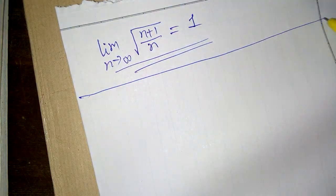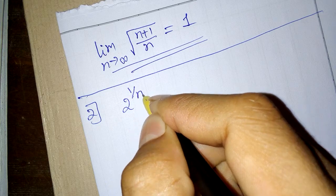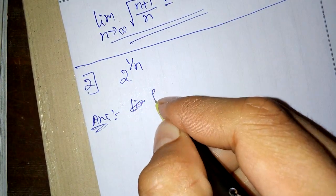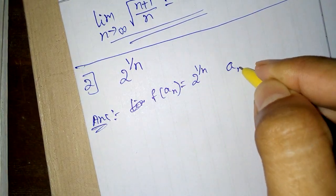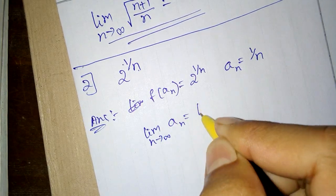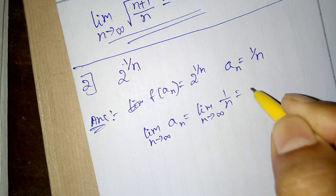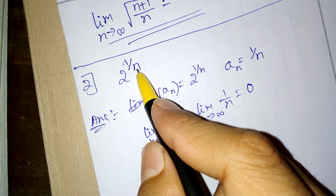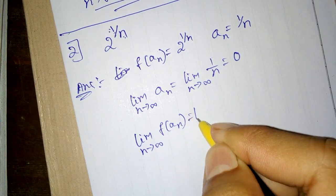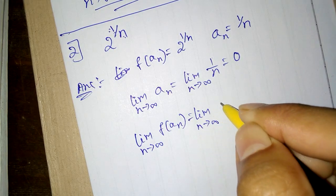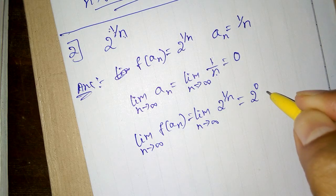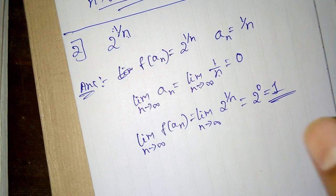The second problem is: find the limit as n tends to infinity of 2 raised to the power (1/n). We take f(An) equal to 2 raised to (1/n), where An is equal to 1/n. The limit as n tends to infinity of An, that is the limit of 1/n, becomes 0. So in place of 1/n we put 0 directly, giving 2 raised to 0, which equals 1. So the answer is 1, also obtained by the Continuous Function Theorem.